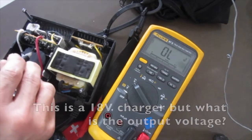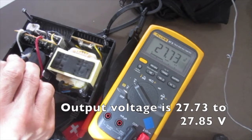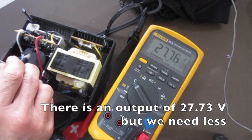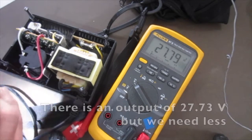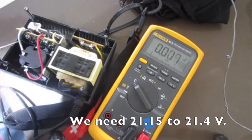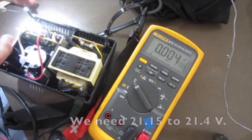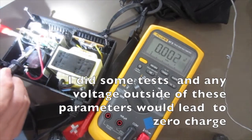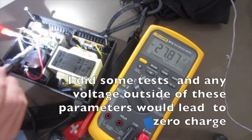The output voltage is 27.73 to about 27.8 volts. There is an output of 27.73 volts so we need 21.15 to 21.4. I did some tests and any voltage outside these parameters would lead to zero charge.